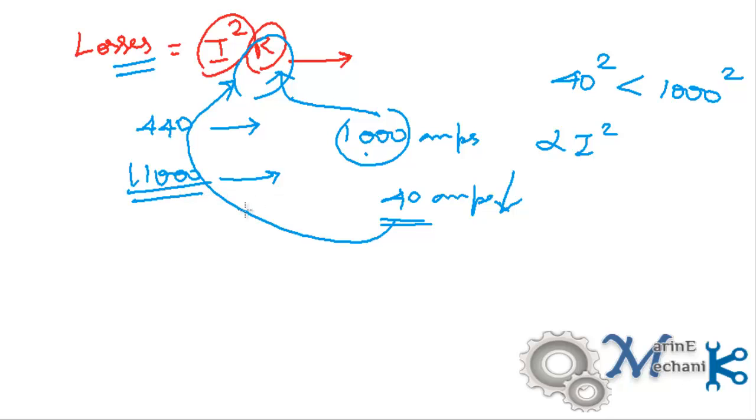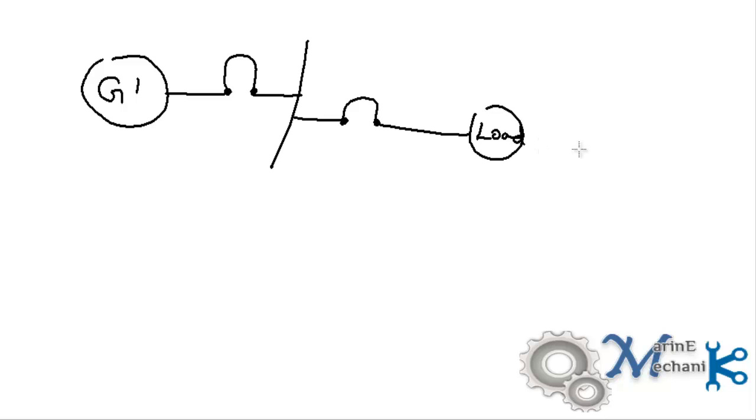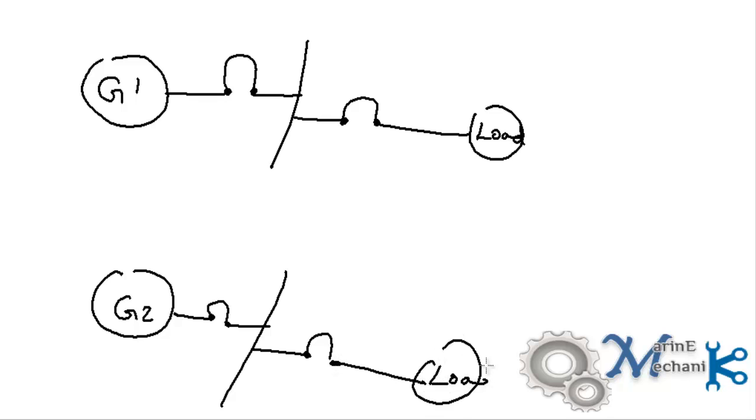Let's now see about the short circuit or fault protection circuits and what advantages we get by using high voltage. Let me draw a simple circuit. This is generator one with a circuit breaker, bus bar, and load. I have one more generator with circuit breaker, bus bar, feeder circuit breaker, and a similar load.